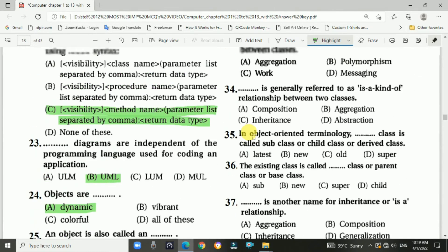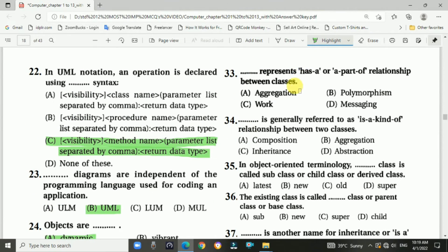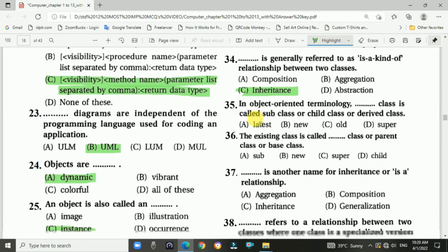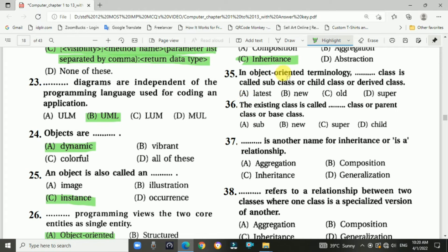Question number thirty-three: Blank represents has-a or part-of relationship between different classes. Answer is A, aggregation. Question number thirty-four: Blank is generally referred to as an is-a kind of relationship between two classes. Answer is C, inheritance. Question number thirty-five: Blank class is called subclass or child class or derived class. Answer is B, new.